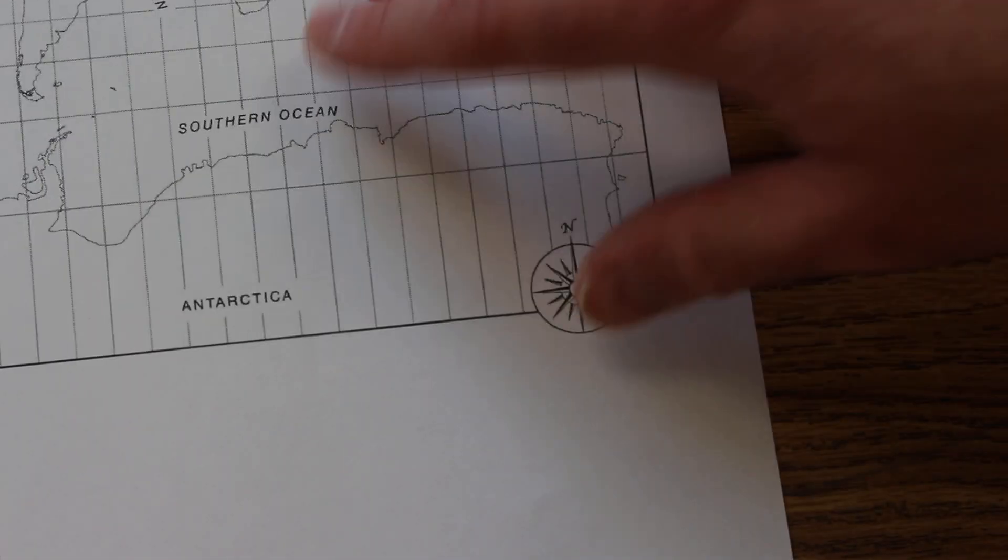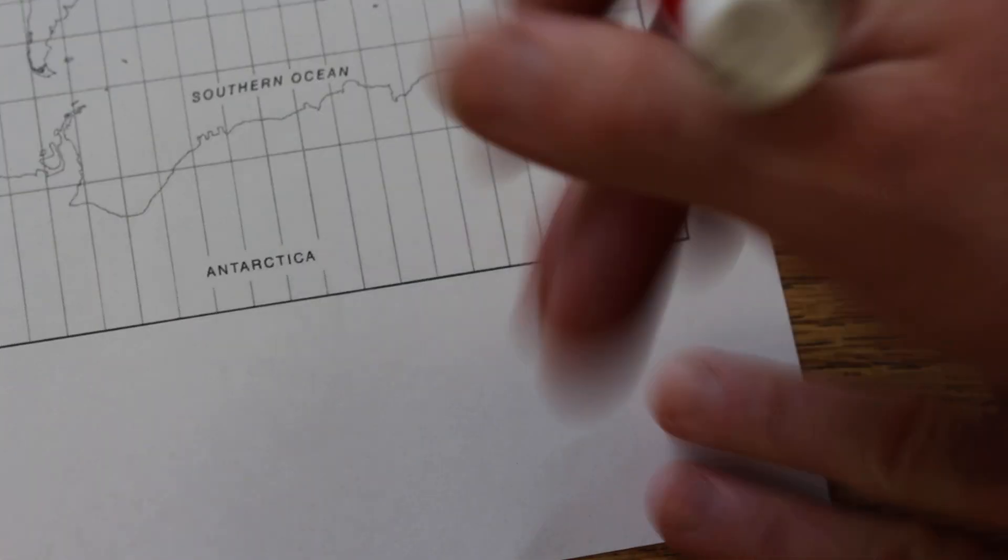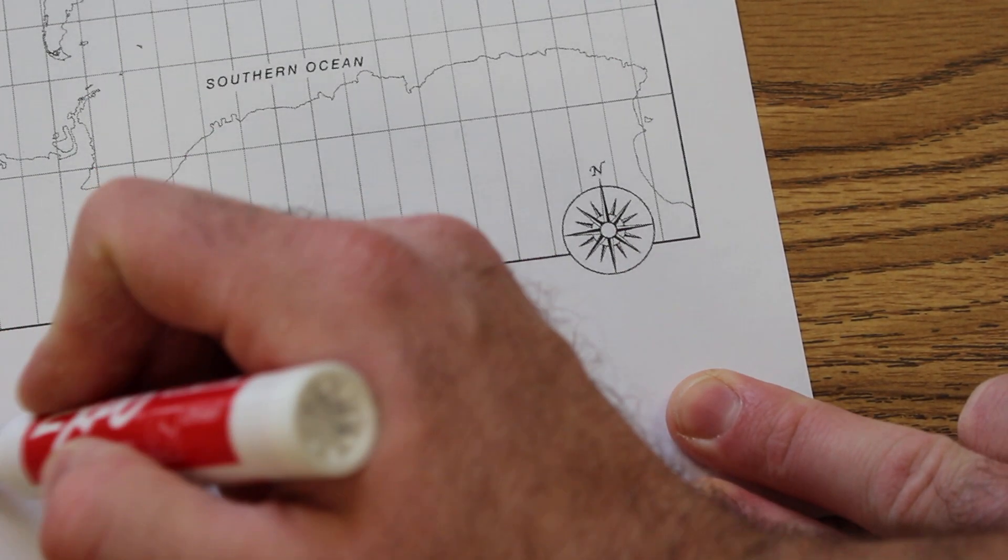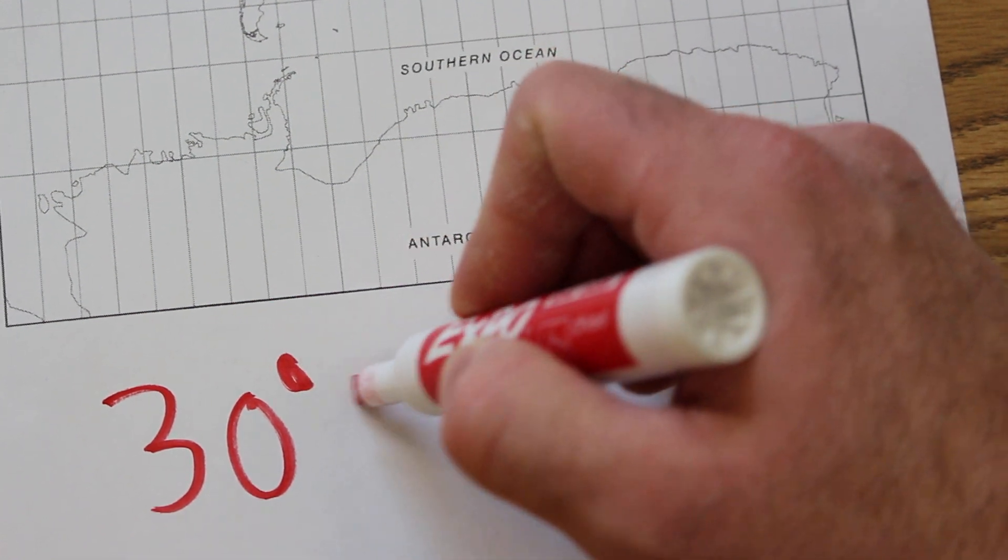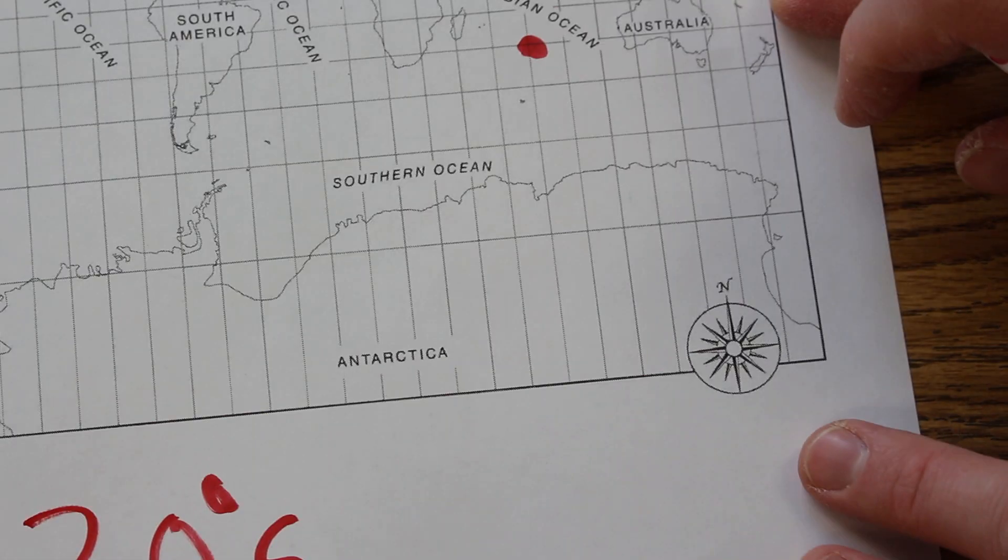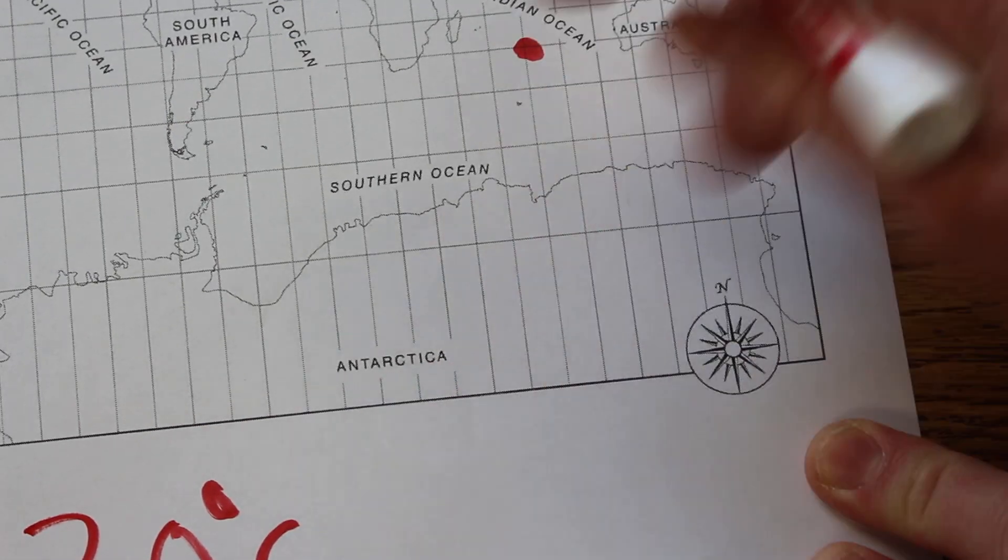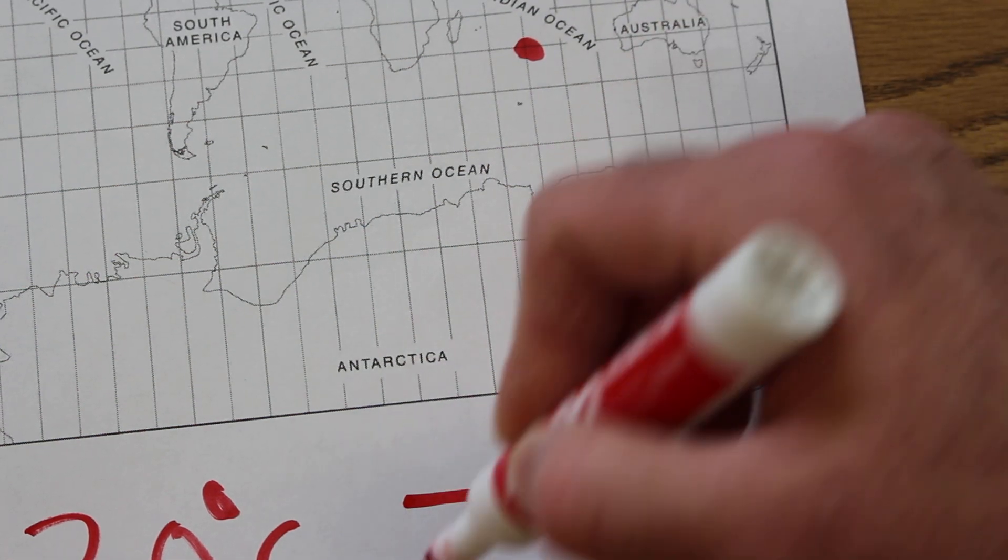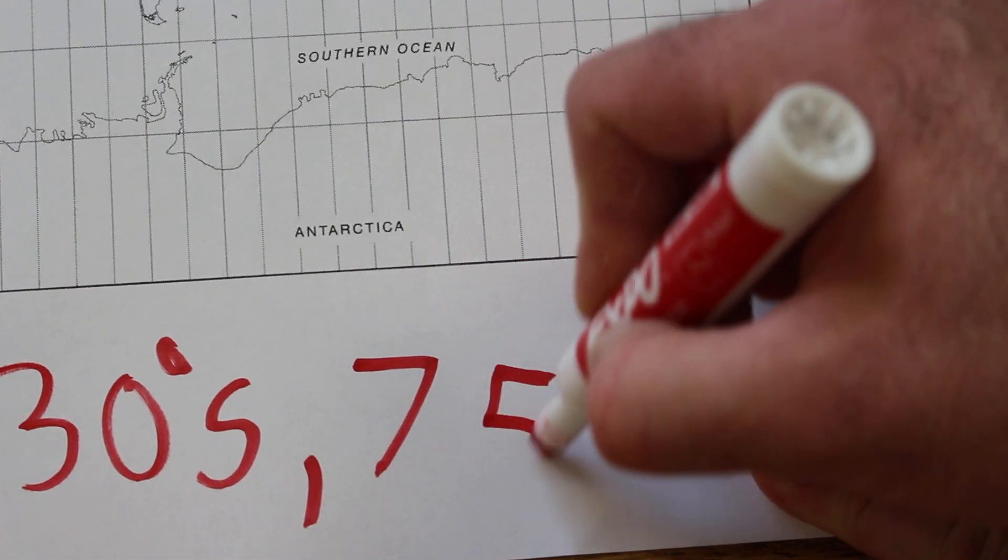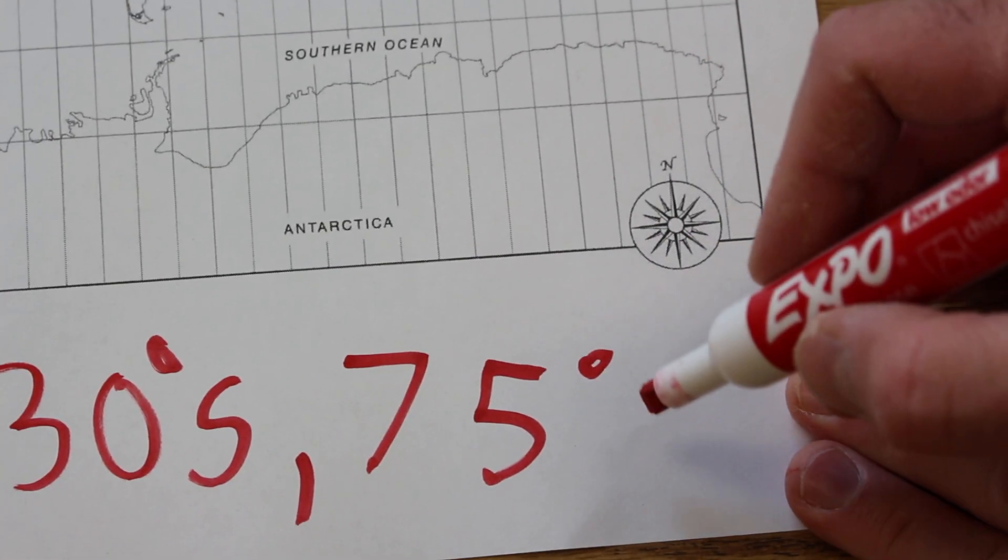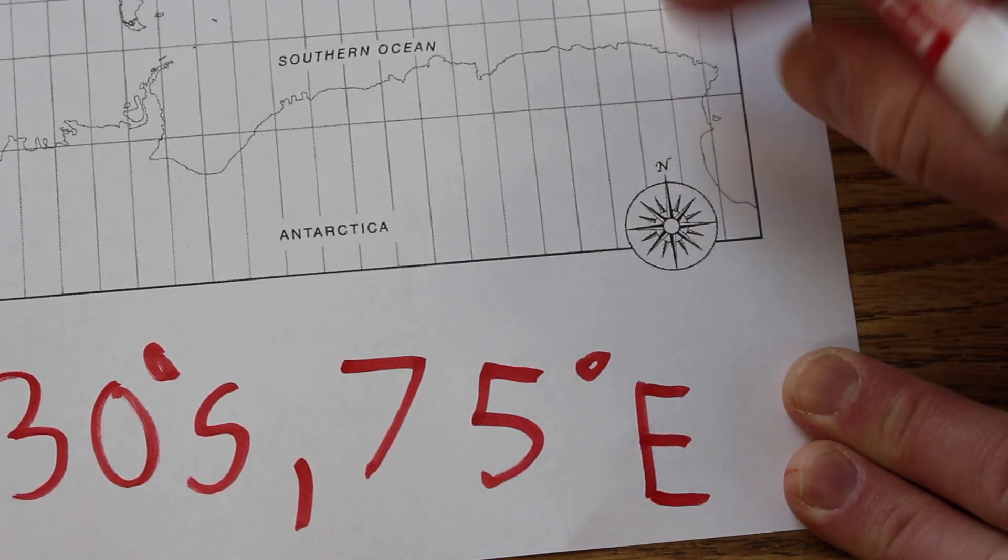This specific point is 30 degrees south and 75 degrees east.